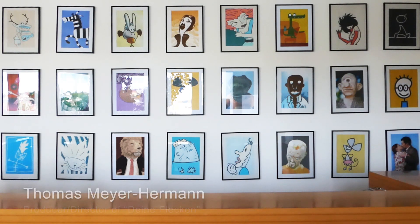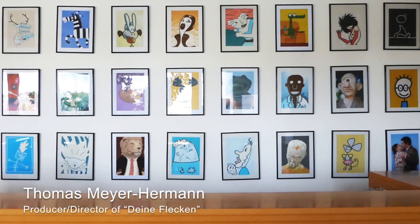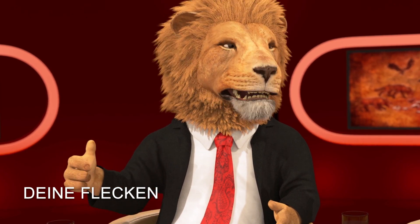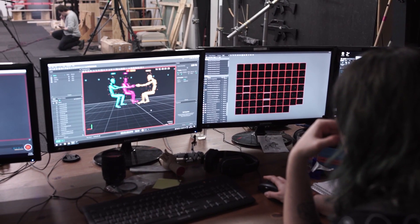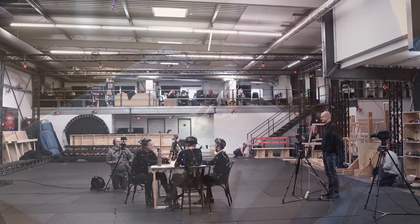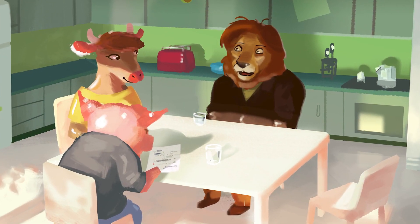And here's Thomas Meyer Hermann. Where's Thomas? Oh, there you are. Thomas is here today to tell us a little bit about his new project, Deine Flecken. Deine Flecken, the German title. We don't know the English yet. Deine Flecken is our first feature film. And it is a feature for an adult audience. It's about a lion who falls in love with a cow.